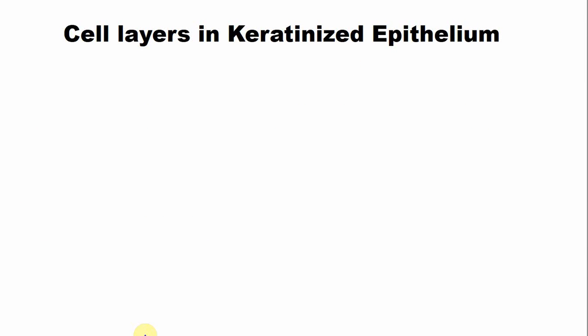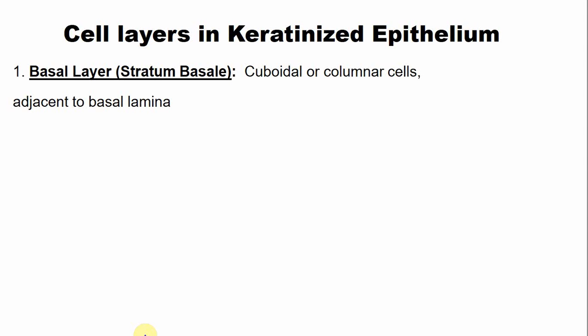In the keratinized epithelium, there are four layers of cells. The first layer is the basal layer, also known as the stratum basale. The basal layer comprises cuboidal or columnar cells that are present close to the basal lamina or the basement membrane. This basal layer is a few cell layers thick.